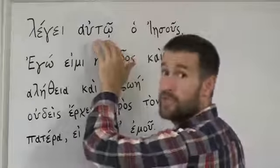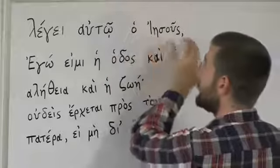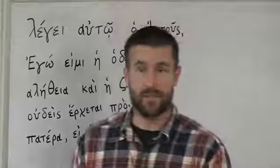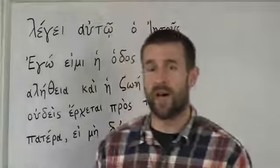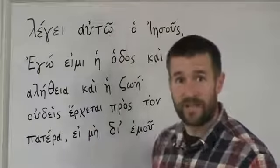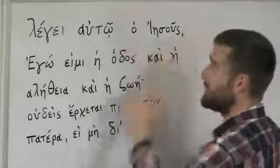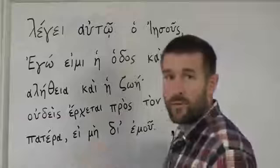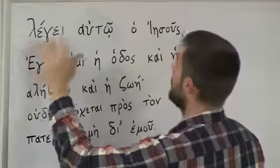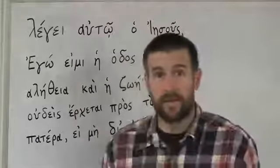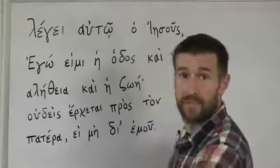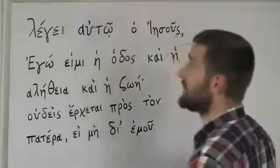Autō means 'to him.' Now the word 'ho' here means 'the.' In English we would not say 'the Jesus,' but a lot of foreign languages put 'the' in front of people's names — German does this all the time. In Greek, just as we saw 'the' in front of God in John 1:1, here 'the' is used in front of Jesus' name. So legei autō ho Iēsous — 'Jesus saith unto him' is what it says in the English Bible.